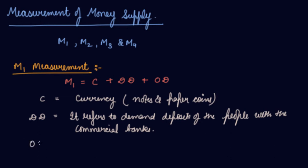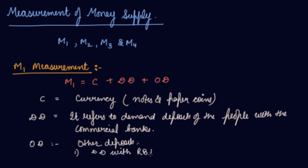The last component of M1 is OD — Other Deposits. These include demand deposits with the RBI by public financial institutions like IDBI, demand deposits with RBI of foreign central banks and foreign governments, and demand deposits of international financial institutions like the IMF and World Bank.